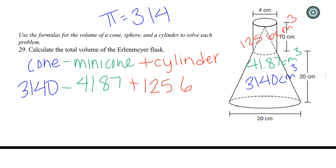So 3,140 minus 41.87. And that gives us 3,098.13. And then we still need to add our cylinder to this. So I'll add this together. So plus 125.6. Then our final answer is 3,223.73 cubic centimeters.